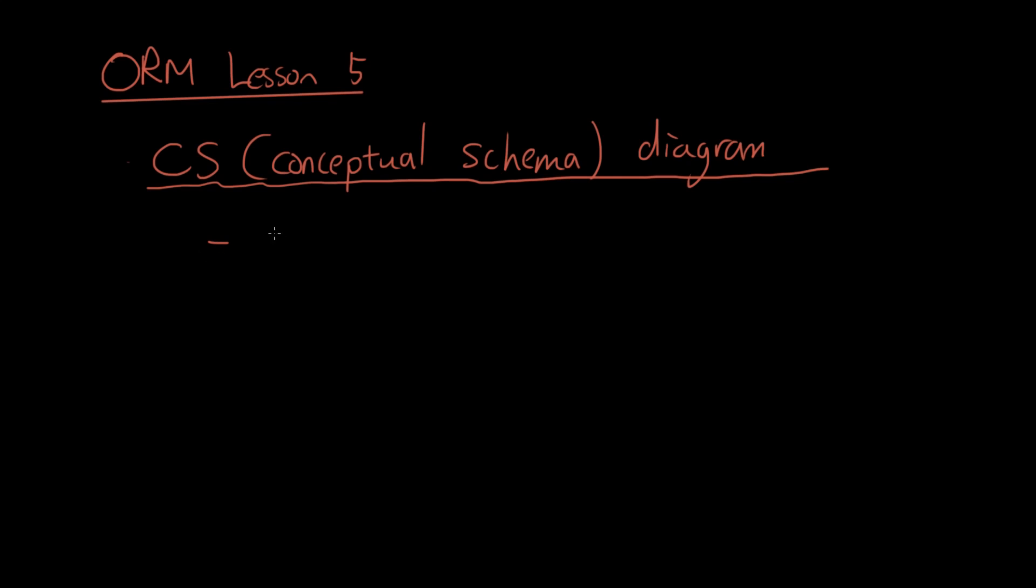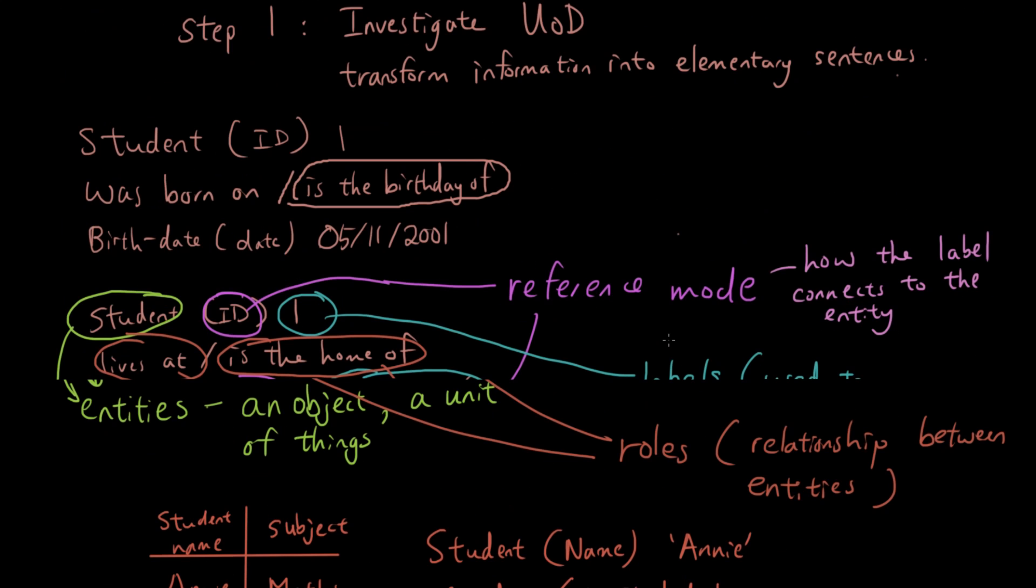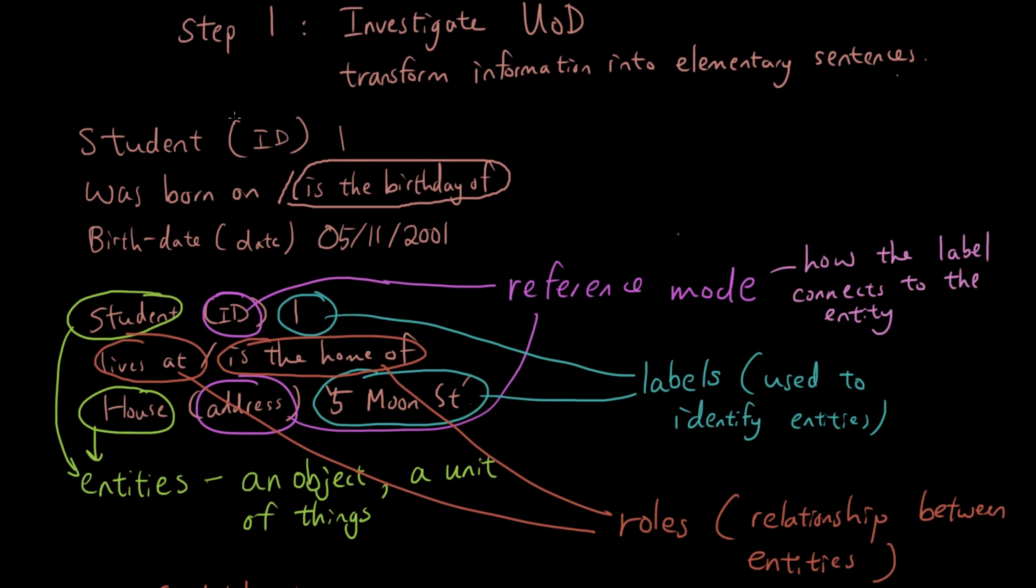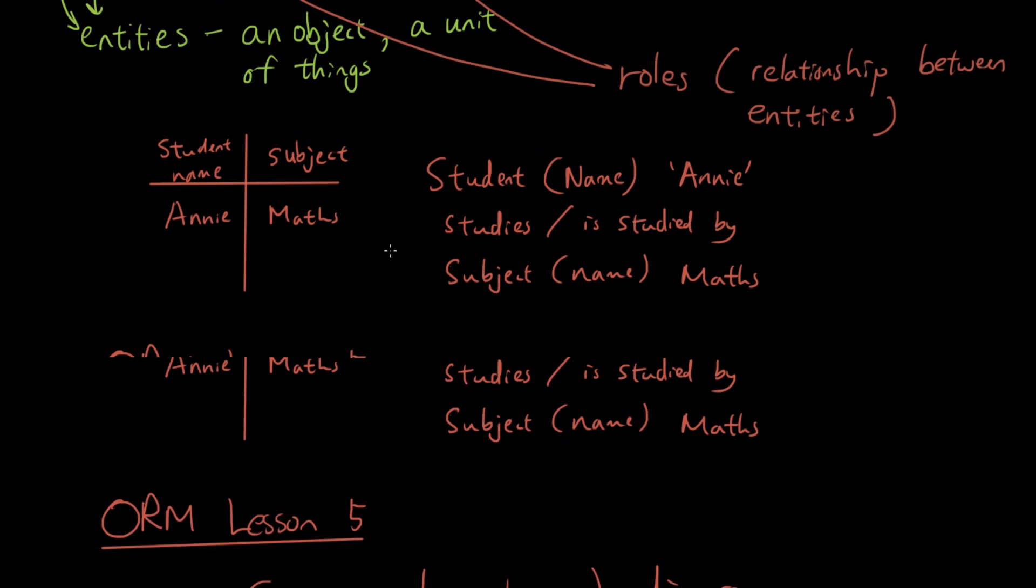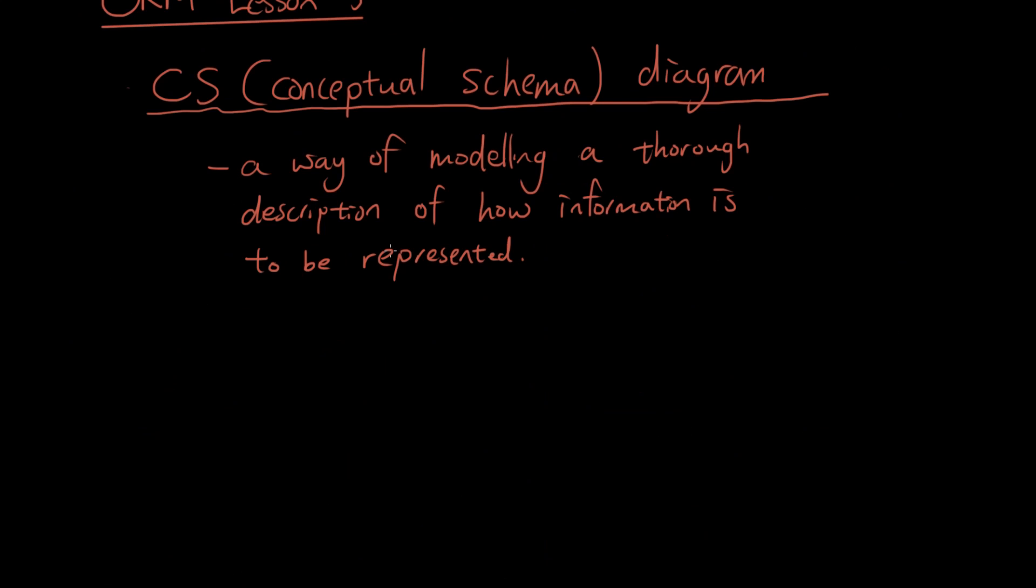So what does the CES diagram or conceptual schema diagram do? Well what it does is it is a way of modeling a thorough description of how information is to be represented. Right now what we have is a lot of elementary sentences with the data but we don't know how to represent this data. And by drawing a CES diagram what we do is we can show how all of this data is related to each other.